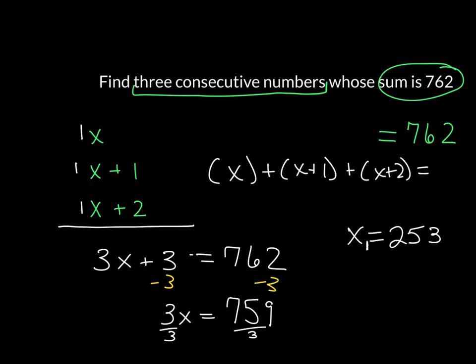That's the first number. Then the second value is just one more than that, 254. And then the third is 255.